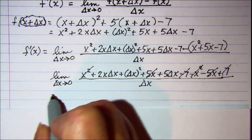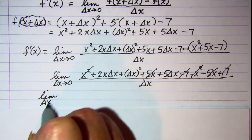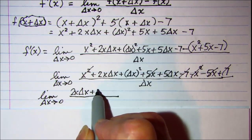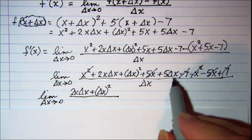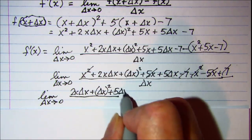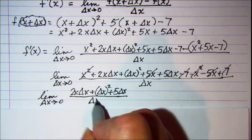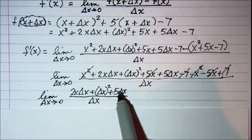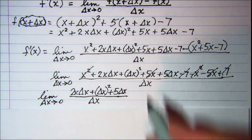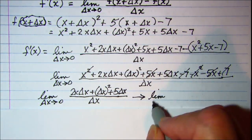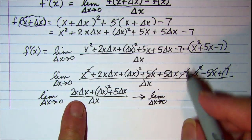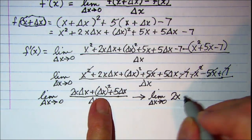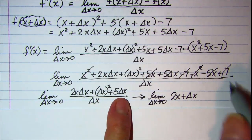So then I'm taking the limit as delta x approaches 0 of 2x delta x plus delta x squared plus 5 delta x, all divided by delta x. I can see that delta x appears in all three terms of the numerator, so I can factor it out and cancel it with the delta x in the denominator. This leaves the limit as delta x approaches 0 of 2x plus delta x plus 5.